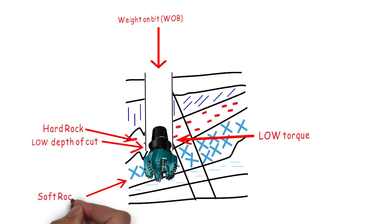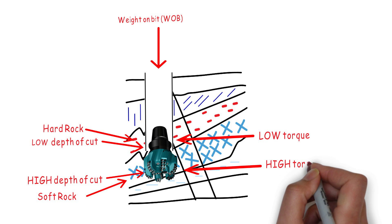But what happens when the formation all of a sudden changes from hard to soft? The same weight on bit energy causes the cutters to go to a much deeper depth of cut. This can be good because the bit will suddenly be drilling faster, but it will also cause a sudden increase in torque.